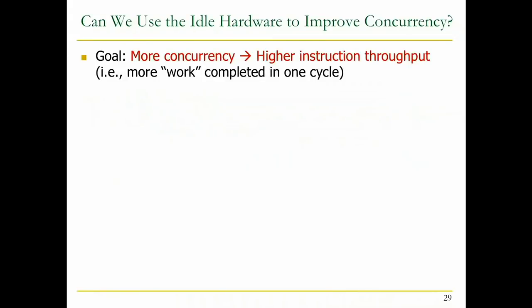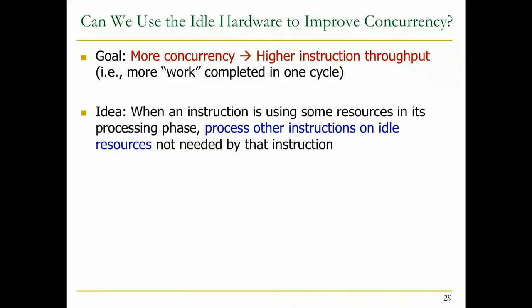Yes - we want more concurrency because we can get higher instruction throughput. Instead of executing six cycles per instruction, or finishing one instruction every six cycles, maybe we could finish one instruction every cycle if we pipeline things. While we're doing some work for this instruction, we're doing some other work for another instruction, and some other work for yet another. The idea is: when an instruction is using some resources, process other instructions on idle resources not needed by that instruction.